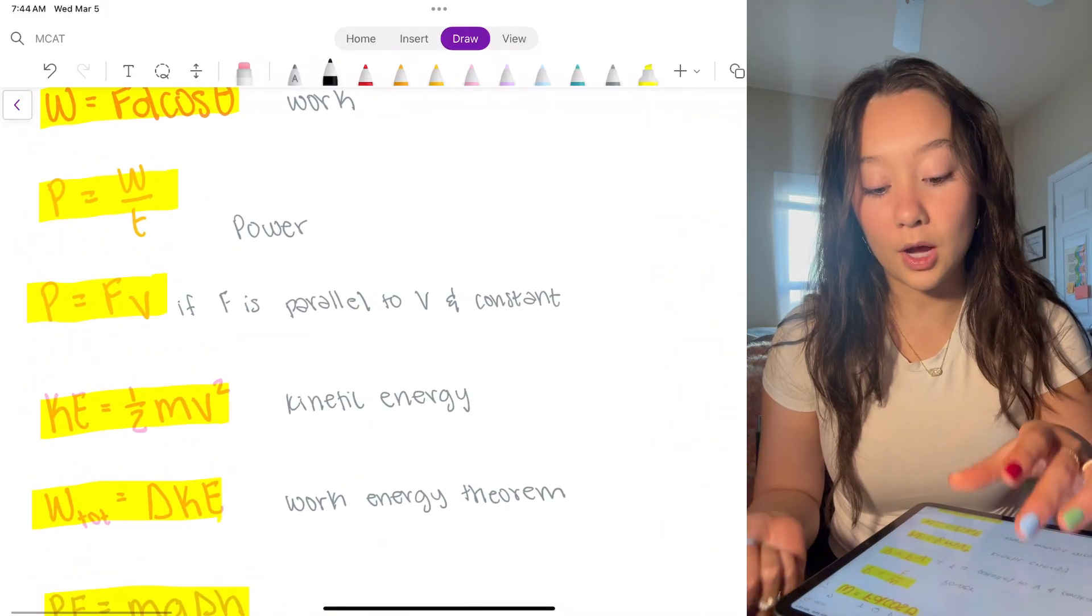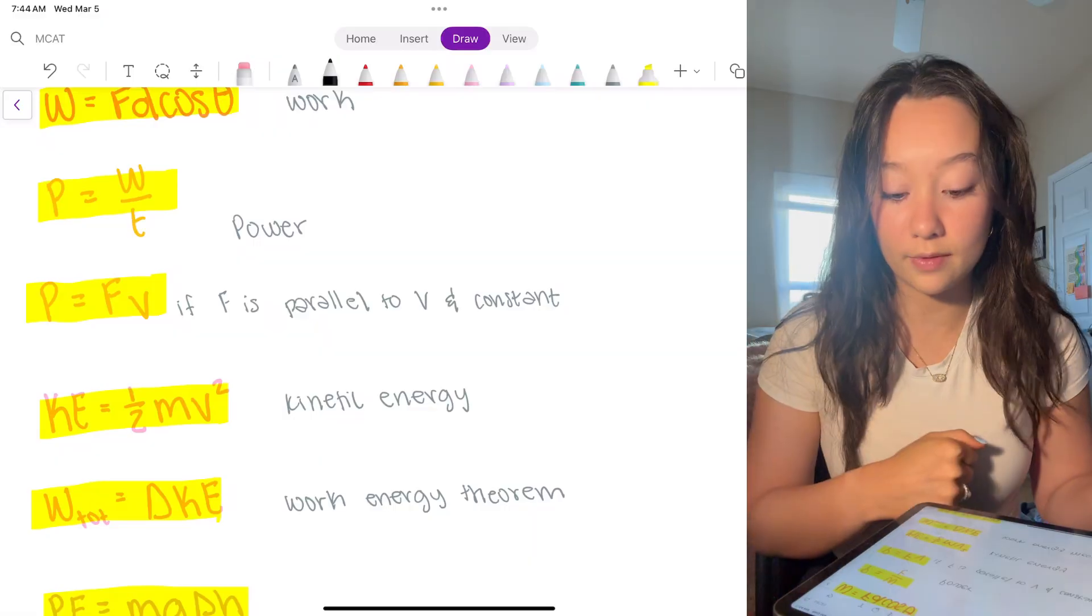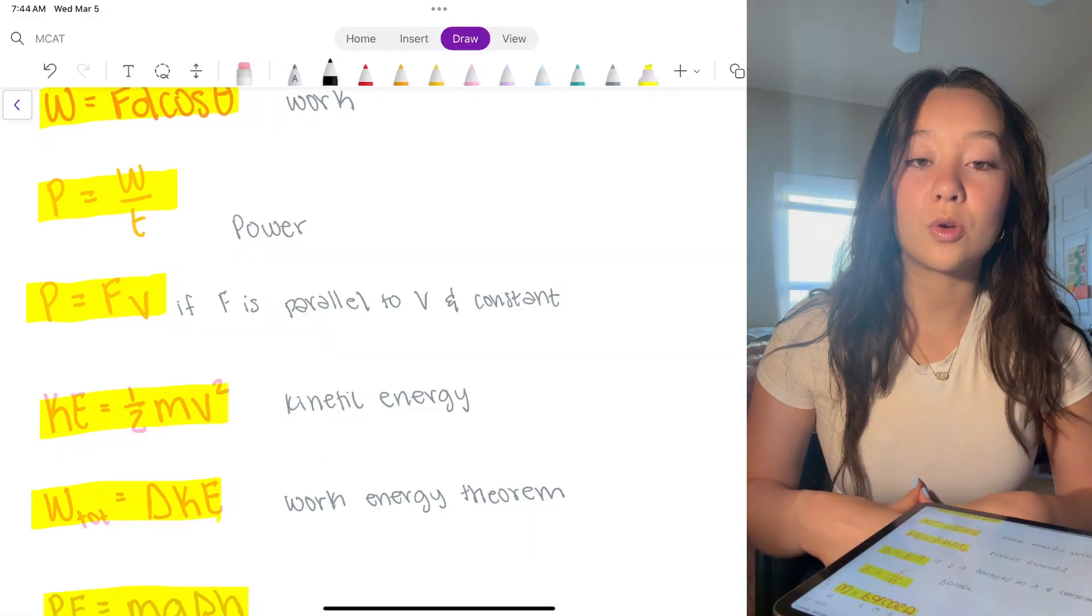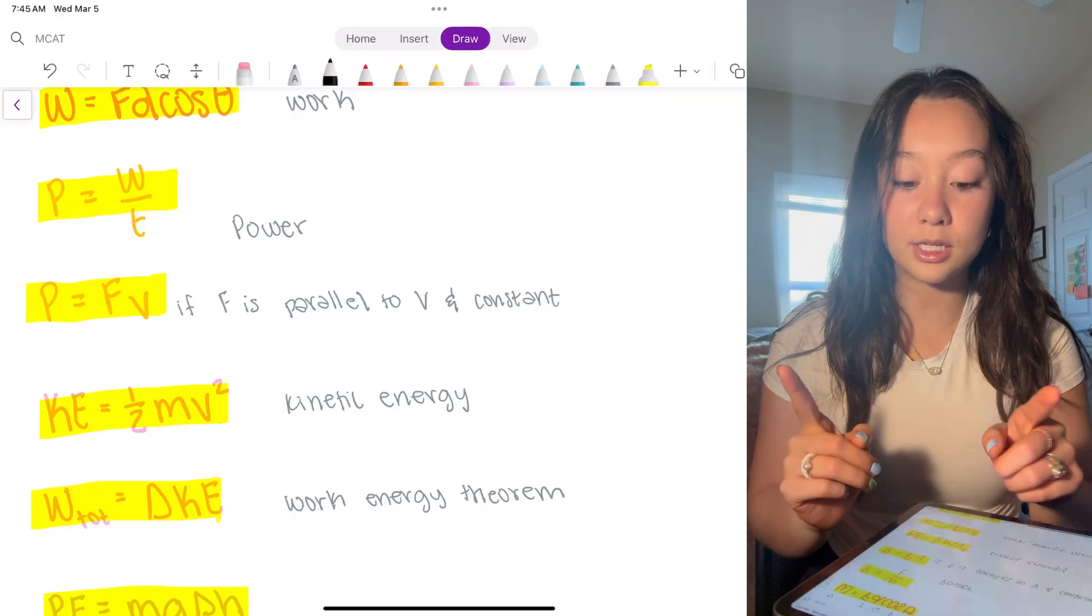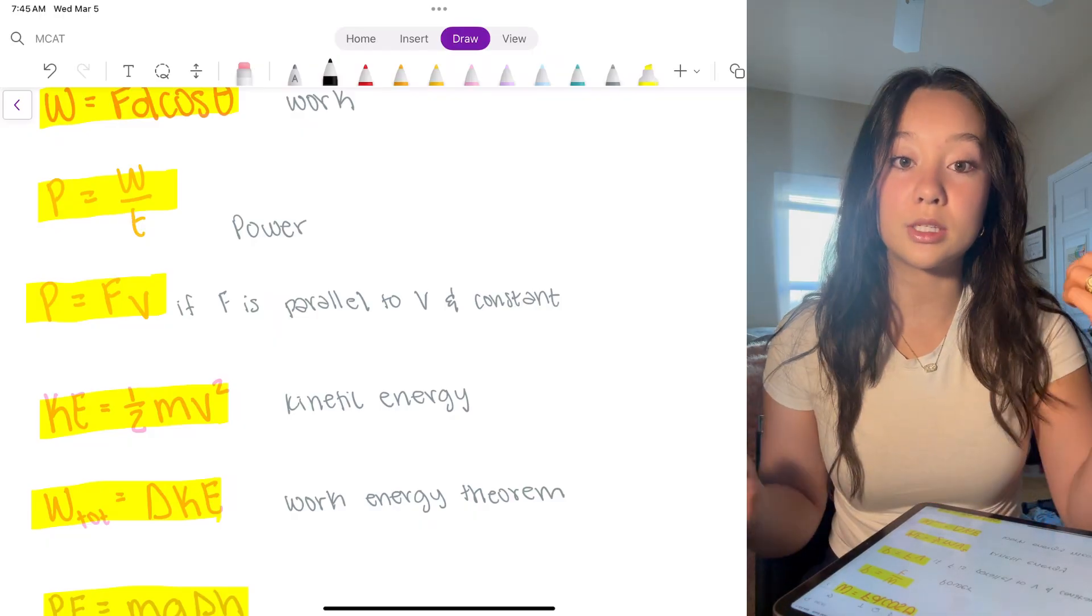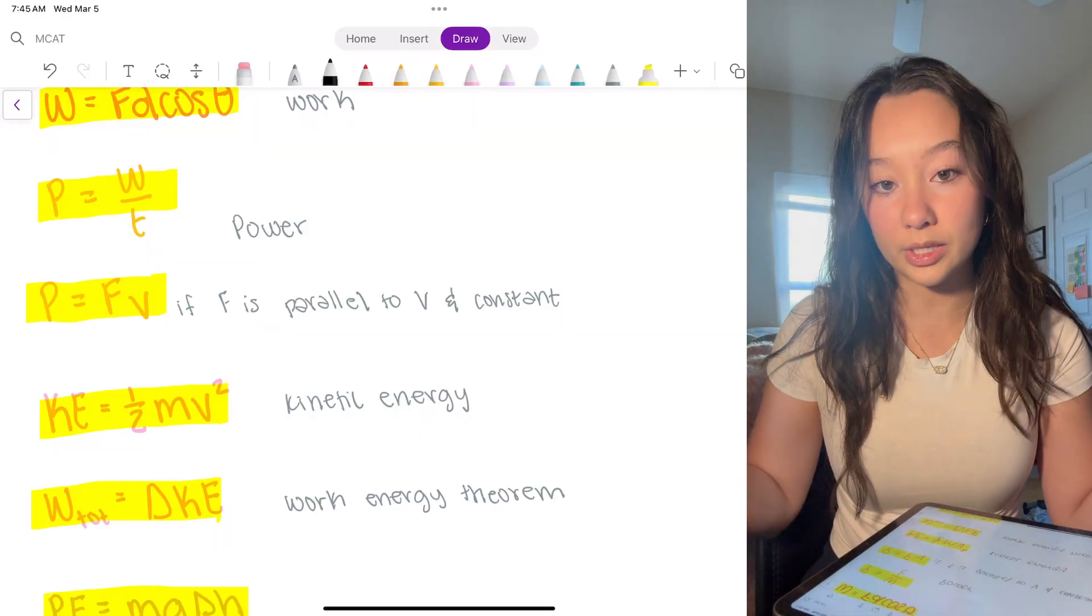Again with the second power one, you don't need to know power equals force times velocity if you know how to derive it. So power equals work over time. We know that work is force times displacement. So power equals fd over t and we know that distance over time is velocity. So power equals force times velocity. That's how you get there.